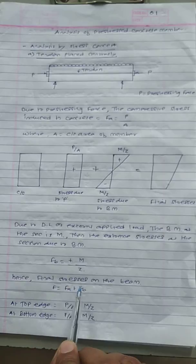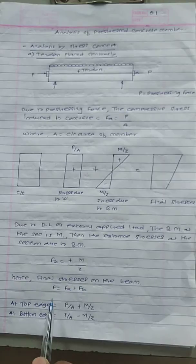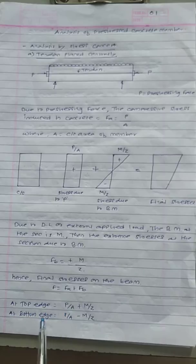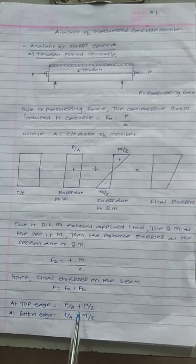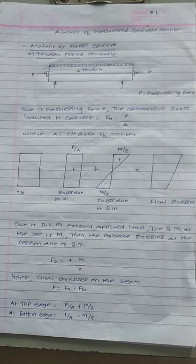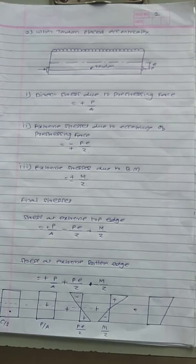The final stresses on the beam equal direct stress plus or minus bending stress. At the top edge: direct stress plus bending stress, that is P/A plus M/Z. At the bottom edge: direct stress minus bending stress, that is P/A minus M/Z.